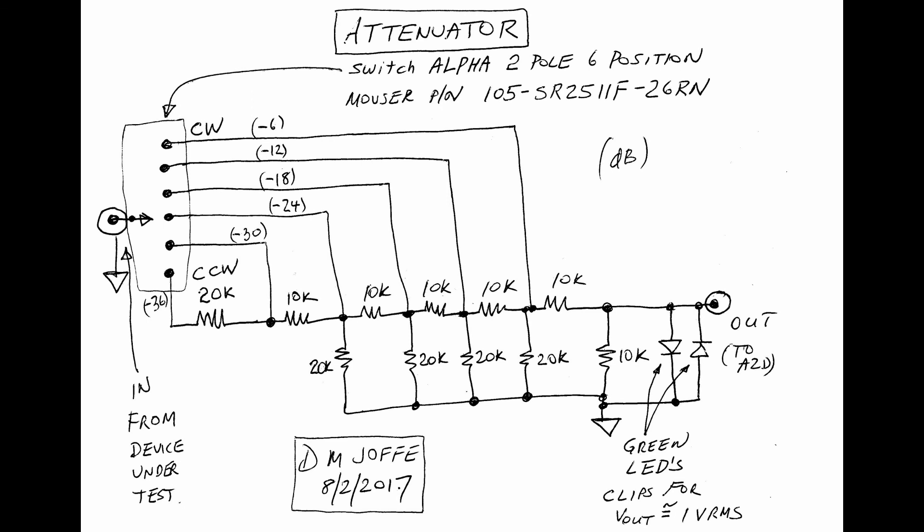The next picture here shows the schematic of the attenuator, and it has, at the end, you'll see a pair of back-to-back LEDs that provide clipping, and they limit the amount of voltage that can appear at the A to D, which protects it. But during normal operation, the clippers are not operational so that they don't add distortion. The rest of the circuit is made up of a selector switch and just a number of 10 and 20K 1% precision resistors.